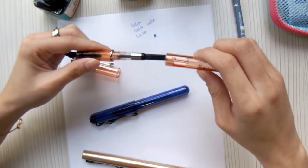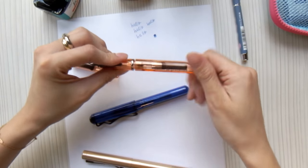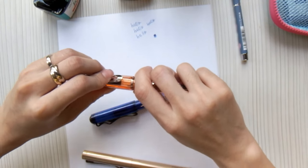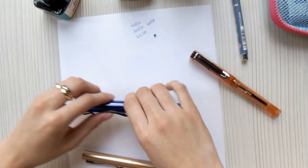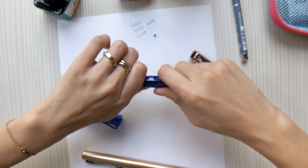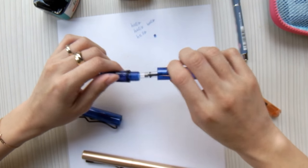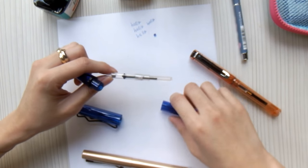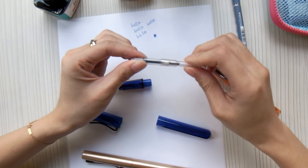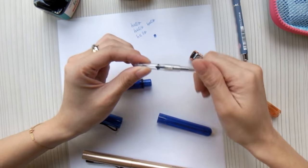This is how it looks like. So the converter basically has two mechanisms. It's either you push the level up and down or either you twist the converter. And for this late the day transparent fountain pen that we have in the shop, which we have also included in our pen box previously, is of the same mechanism. You twist the converter as well.